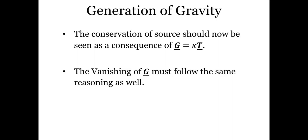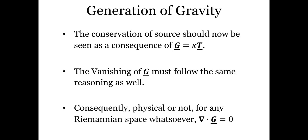The vanishing of the divergence of G will also have to follow the same reasoning. Note that G must not vanish identically — it is the divergence of G that has to vanish. For any Riemannian system whatsoever, whether it's describing a real geometry or some imaginary geometry, the divergence-lessness will have to hold.